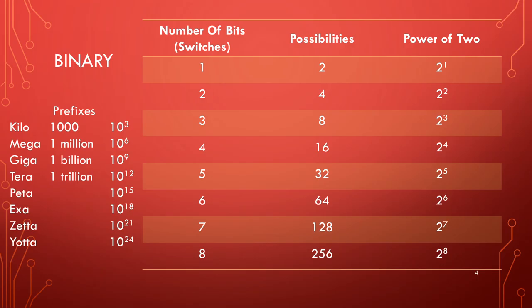Going back to binary and bits and bytes: one byte is eight bits. We used to have — and still have — ASCII: A-S-C-I-I, the American Standard Code for Information Interchange.